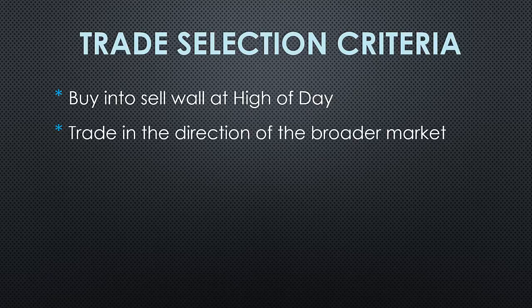Rule two is also about momentum and applies to many setups: you want to be trading in the direction of the broader market. If the market's going up strongly, you want to be looking to buy, and vice versa when the market's selling off. There's an old adage that when the market's going up, 80% of stocks rise, and when it's falling, 80% of stocks fall — it really just puts the odds in your favor.